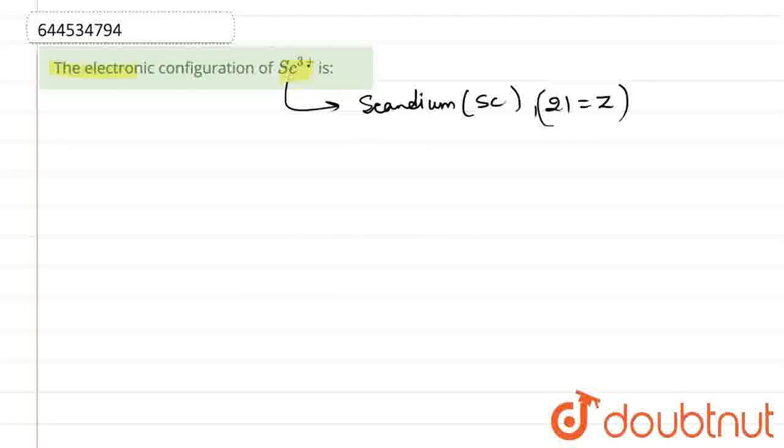So in order to write the electronic configuration of SC3+, we will first write the electronic configuration of SC. The electronic configuration of SC with atomic number 21 is AR, then we have 3D1 and 4S2.